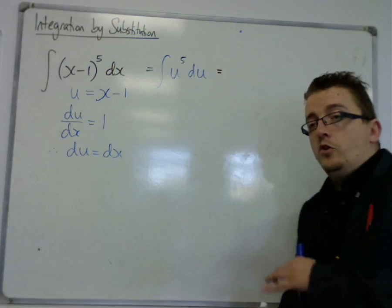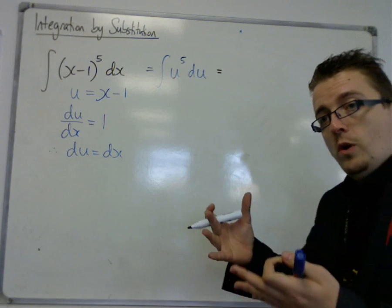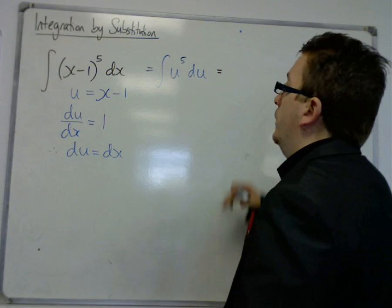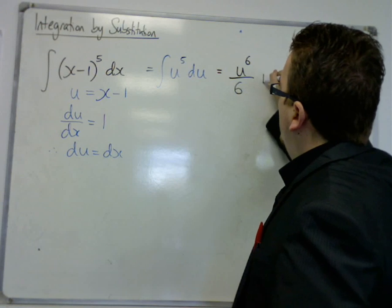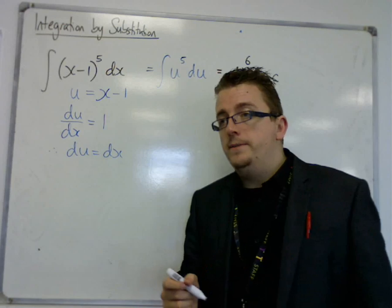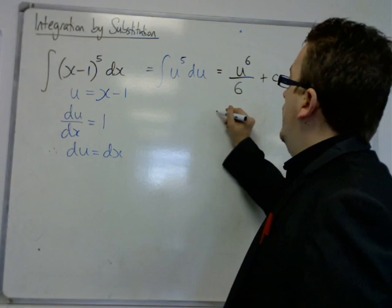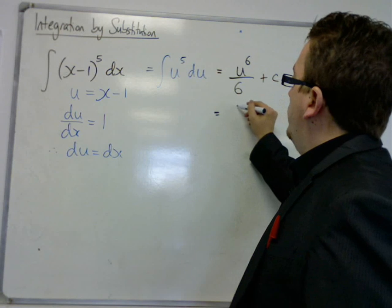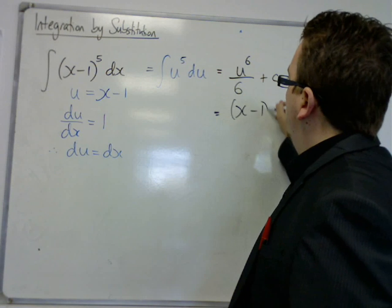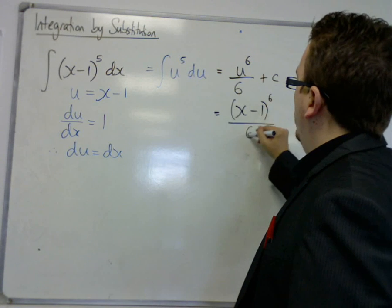So now we're just integrating u^5 du. Now, we know how to do that because that's referred it back to a core 1 example. So you add 1 to the power, divide by the new power, and we've got that constant of integration c. And now, u was x-1.